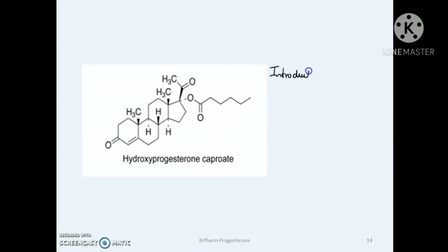Next modification is the introduction of a 6-methyl group. Alpha methyl group enhances the activity as well as reduces the metabolism. Example is medroxyprogesterone.